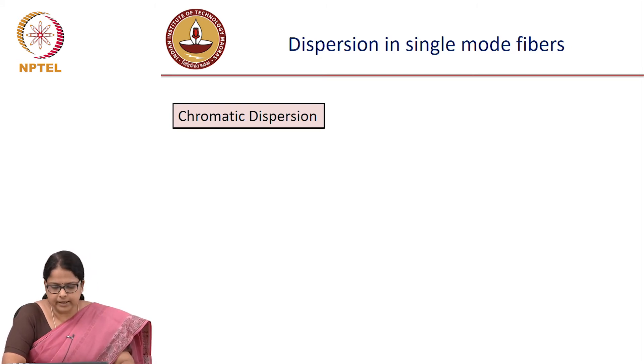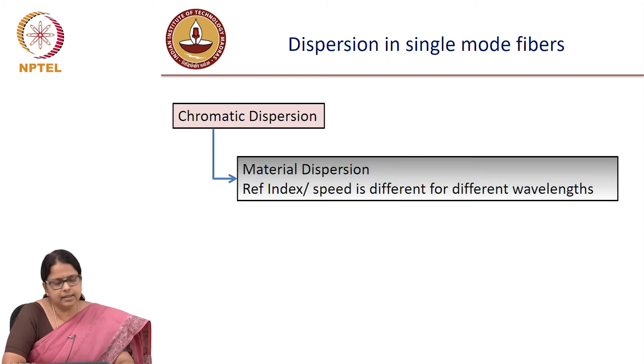The chromatic dispersion in single mode fiber either is because of the material dispersion where you say that the refractive index is different for different wavelengths. Where are these different wavelengths coming from? The laser has a certain linewidth, it has a certain lambda spread, so there are different wavelengths. There is one more reason why there are different wavelengths or different frequencies.